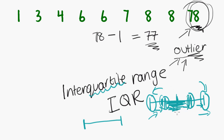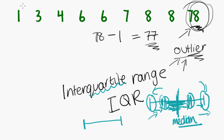We already know how to find the middle of the data — that is the median. So the first step is to find the median, and then we find other little medians inside those chunks. To find the median we count our way into the middle, crossing off from each end until we reach the middle value.